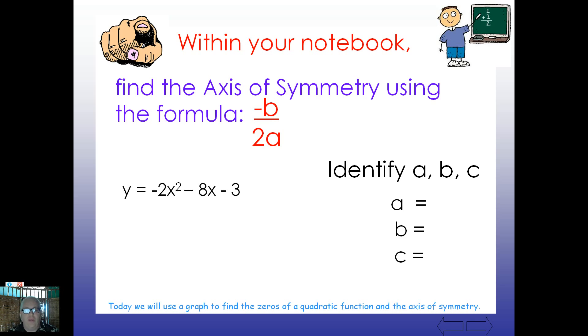Last one I think. Negative 2x squared minus 8x minus 3. Give that one a try. Check your answer here. Did you come up with an axis of negative 2? Remember that negative 8 here for b becomes positive 8. 2 times negative 2 is negative 4. So we end up with a positive divided by a negative. So you get your negative there.